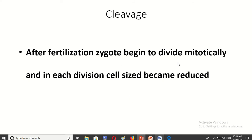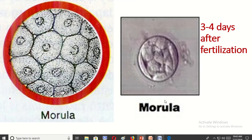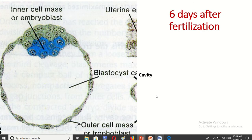Then cleavage division begins after fertilization. The zygote begins to divide mitotically and with each division the cells become reduced in size. This is the 4-cell stage seen after 40 hours of fertilization. This is the morula, which forms within three to four days after fertilization.